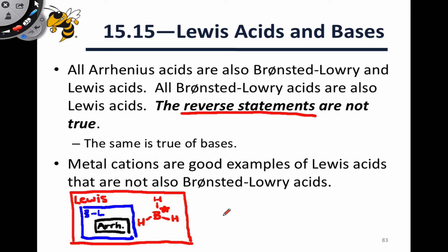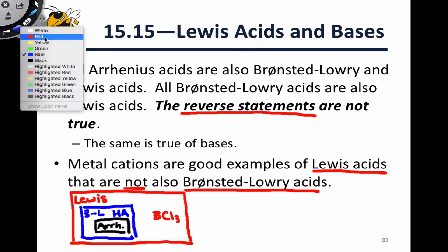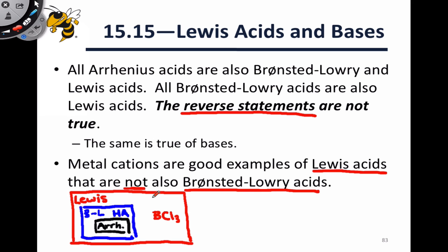It actually takes a very strong base to remove one of those hydrogens from BH3. And something like BCl3, which doesn't even have any hydrogens, is another great example of something that can't possibly act as a Bronsted-Lowry acid. Metal cations are also great examples of Lewis acids that are not Bronsted-Lowry acids — they lack hydrogen atoms, so they can't donate a proton. A highly electron-deficient metal cation like Al3+, with its large positive charge, is a great Lewis acid that can accept electron pairs, but it cannot donate a proton, so it's not a Bronsted-Lowry acid.